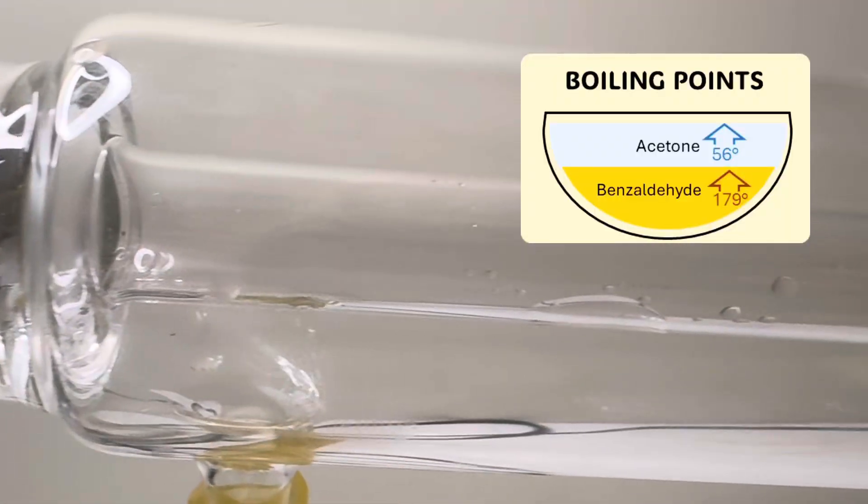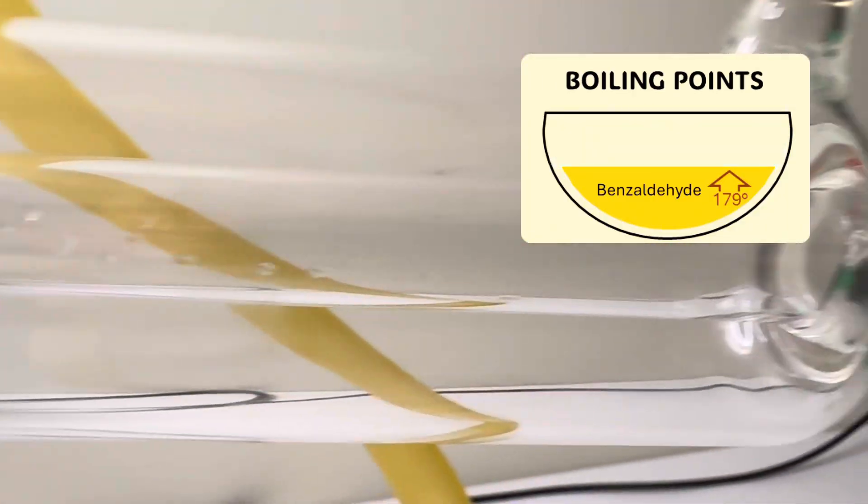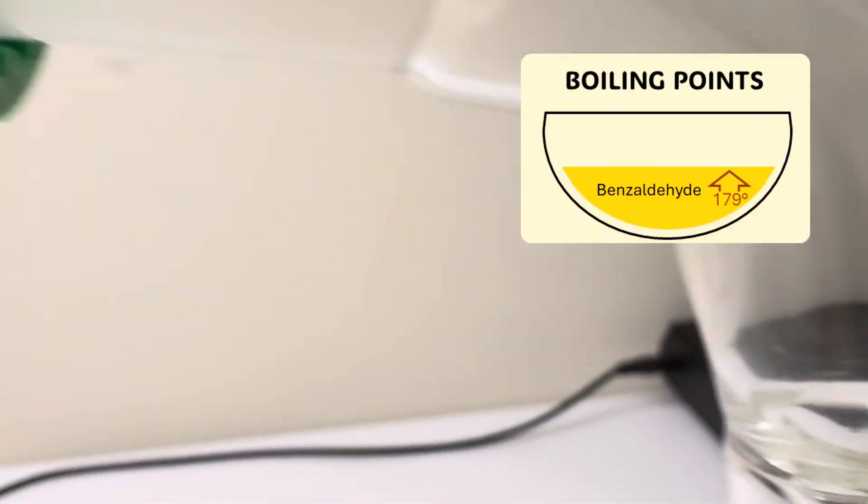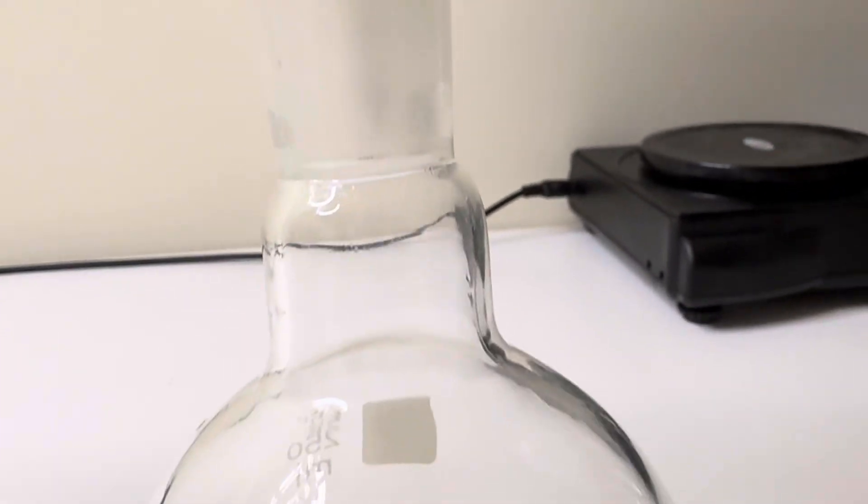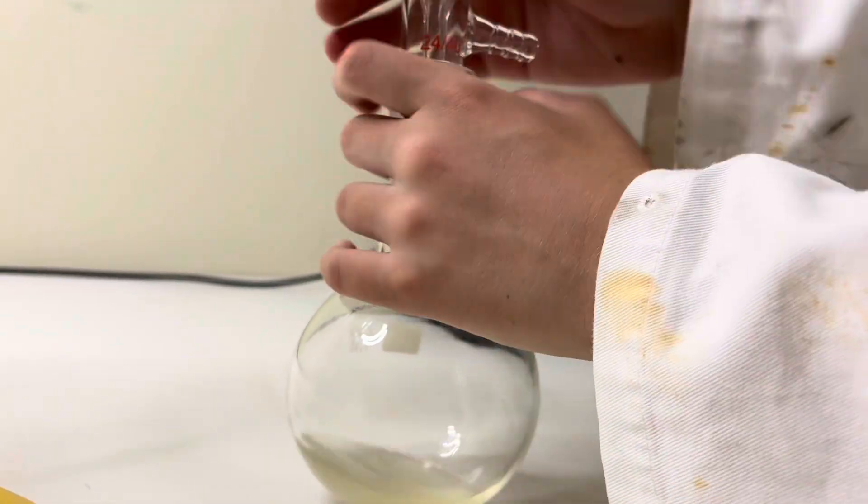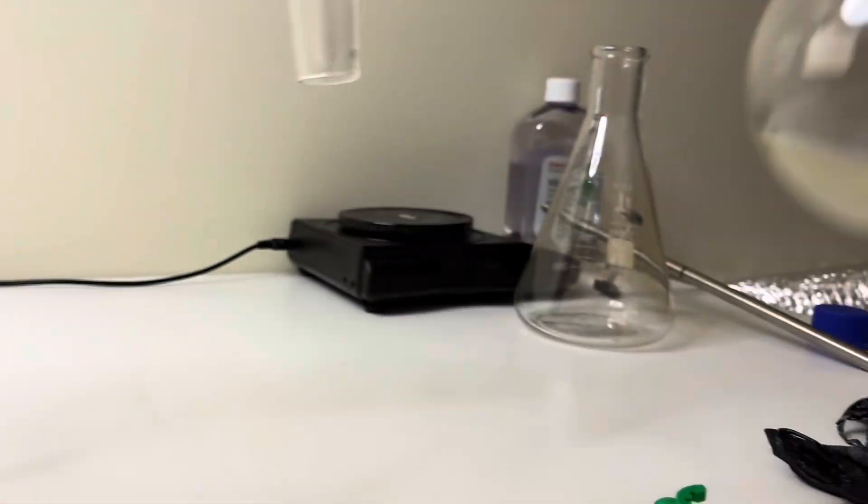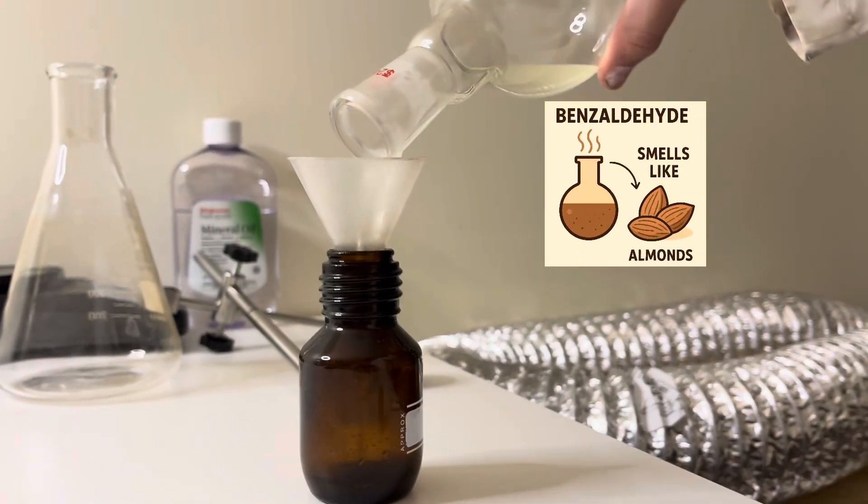So first the acetone boils off. And once the thermometer reads about 180 degrees Celsius, I collect the condensed liquid in the receiver flask giving me purified benzaldehyde. It smells like sweet and bitter almonds.